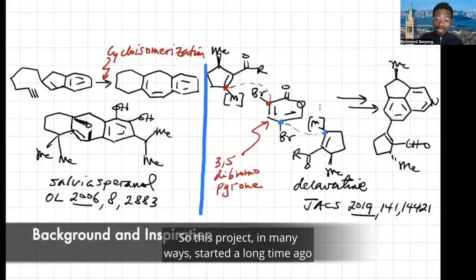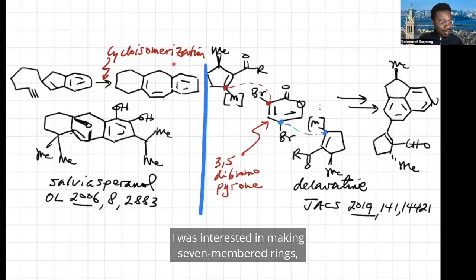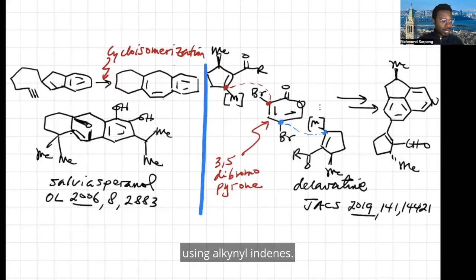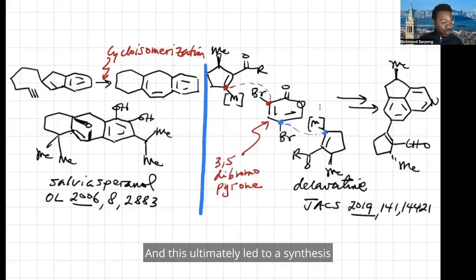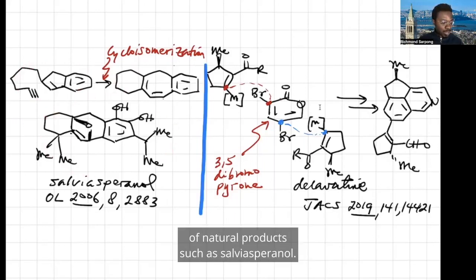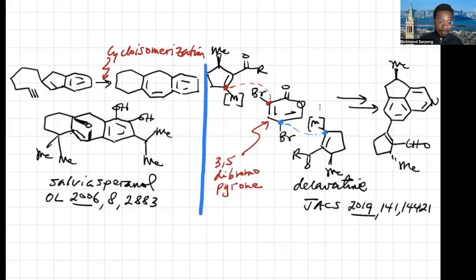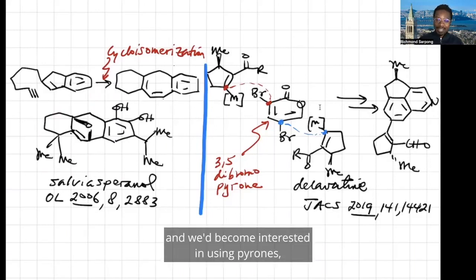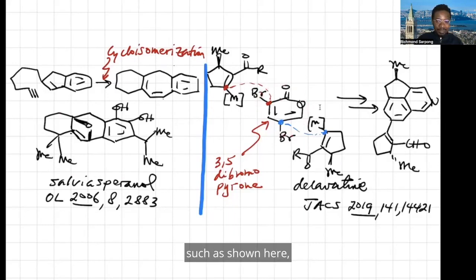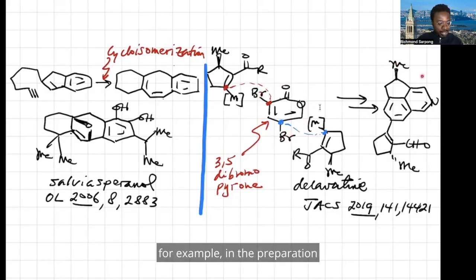So this project in many ways started a long time ago, when I began at Berkeley. I was interested in making seven-member rings, such as shown here, using alkynal indines. And this ultimately led to a synthesis of natural products such as salvia speranol. Fast forward many years later, and we had become interested in using pyrones, such as shown here, as starting materials for synthesis — for example, in the preparation of natural products such as Delovatine.